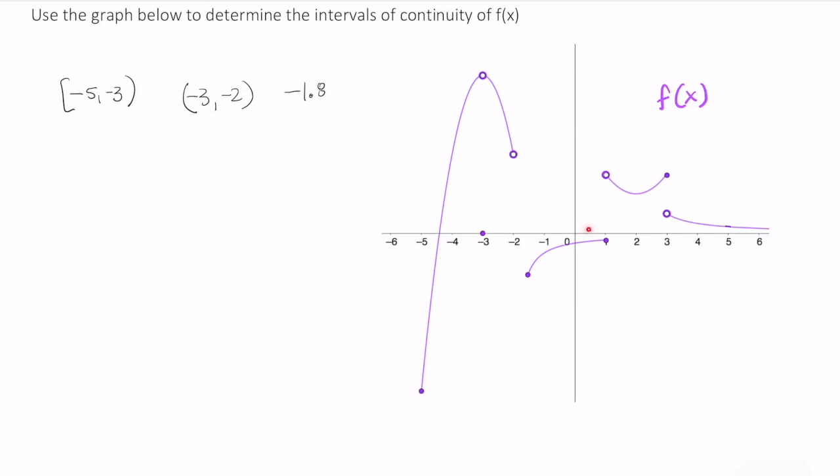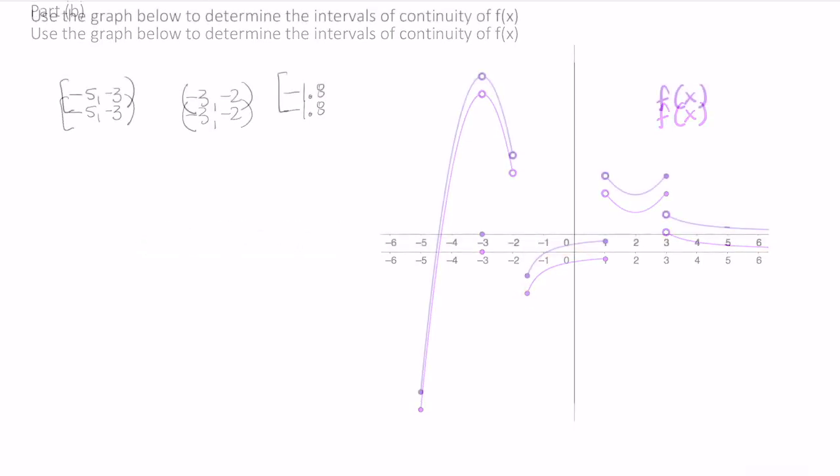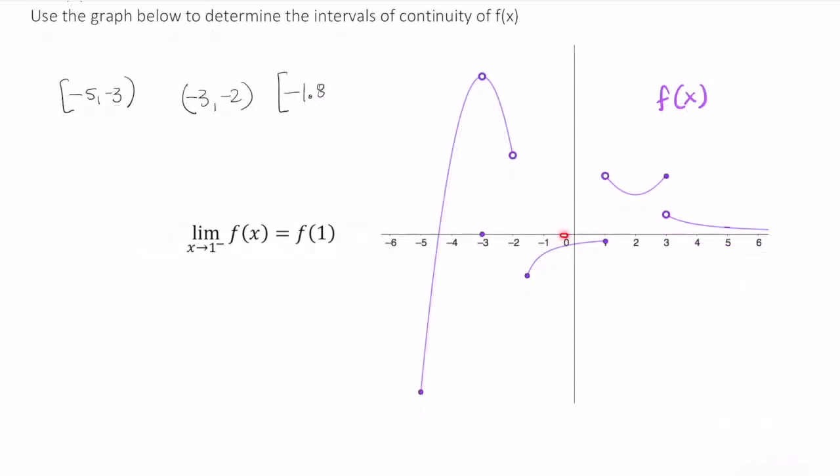And as we can see, as we approach negative 1.8 from the right, f evaluated at negative 1.8 is equal to the limit. Additionally, as we approach 1 from the left, f evaluated at 1 is equal to this limit.